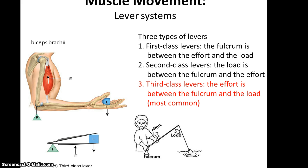The third-class lever is actually the most common in the human body, and it is where the effort is between the fulcrum and the load. Examples include tweezers, or going fishing — where the fulcrum is where you hold the end of the rod, the effort is you pulling on the rod, and the load is the fish. One of many examples in the human body is the biceps brachii, where the fulcrum is the elbow, the effort is where the biceps brachii is located, and the load is what's in your hand.